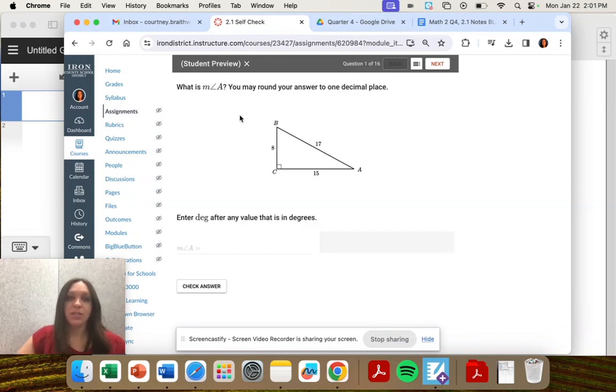All right, question one. What is the measure of angle A? Round your answer to one decimal place and enter degrees.